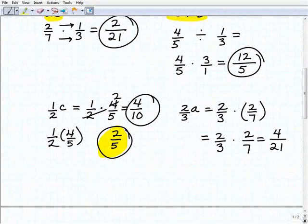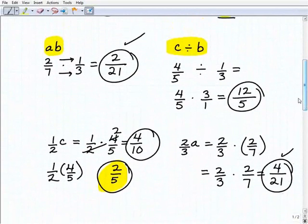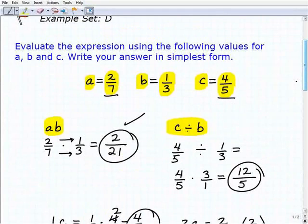I have all my prime factors here. So nothing cross cancels. That's it. Four twenty-firsts will be the product. Pretty straightforward. Just another exercise. We're practicing multiplying and dividing fractions and a quick review on what it means to evaluate. All right, so keep working hard and we'll see you soon.